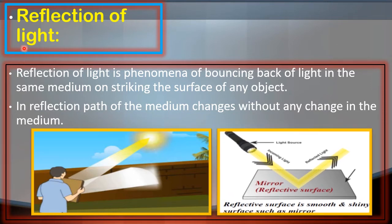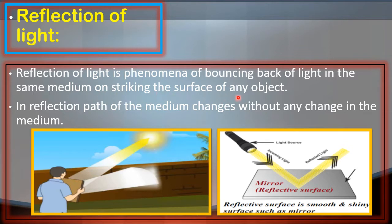Students, Reflection of Light का मतलब है Bouncing Back of Light. यानि जब Light strike करती है किसी surface के साथ, किसी object के साथ, तो वो bounce back होती है in the same medium. तो इस bouncing back of light को हम कहते हैं Reflection of Light. So, Reflection of Light is the phenomenon of bouncing back of light in the same medium on striking the surface of any object.